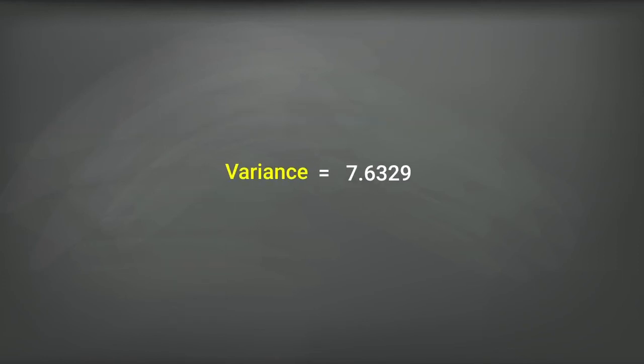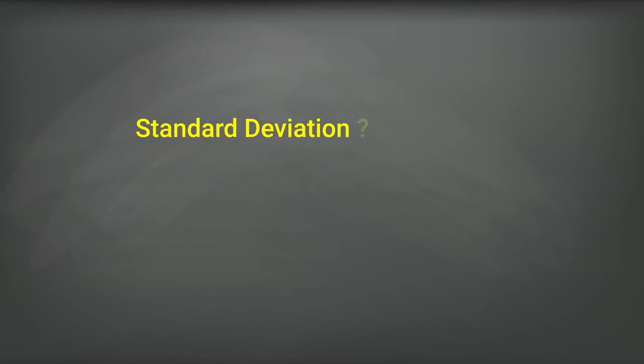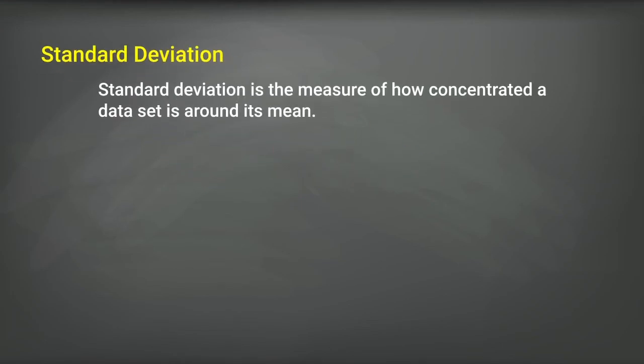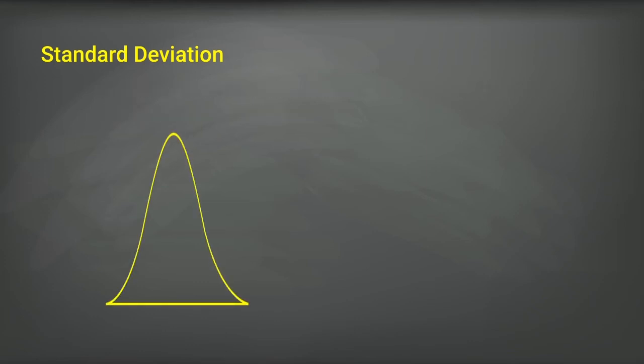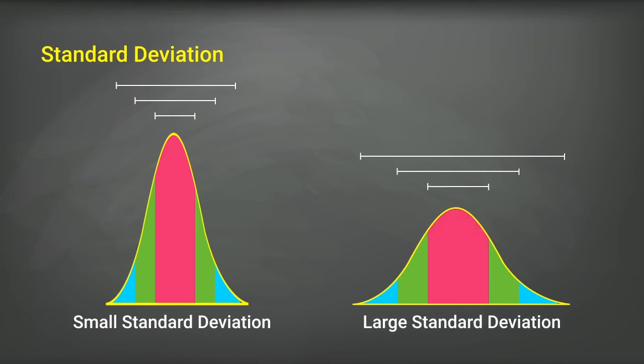Variance is the average of all squared deviations. It is used to find standard deviation. What is standard deviation? Standard deviation is the measure of how concentrated a data set is around its mean. It is inversely proportional to how concentrated the values are. That means the higher the concentration, the lower the standard deviation, and vice versa.